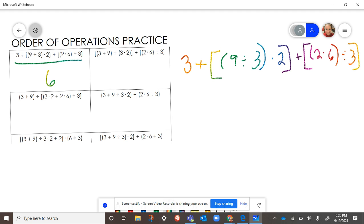And so the very first thing is just thinking about that GEMDOS. So G stands for those groups, E exponents, you've got multiplication, division, adding, and subtracting.